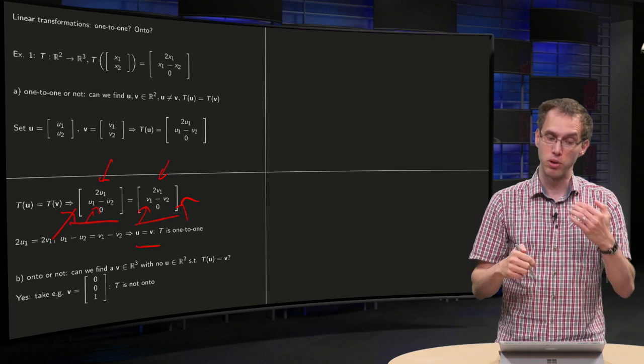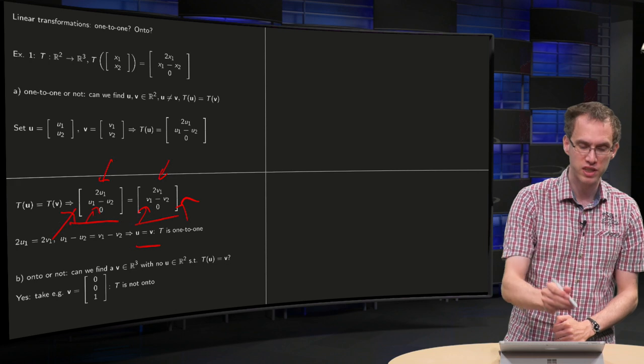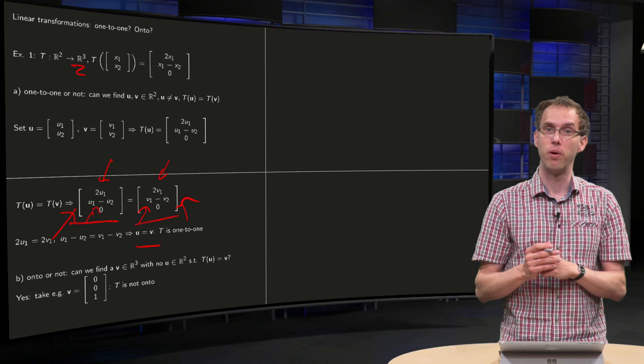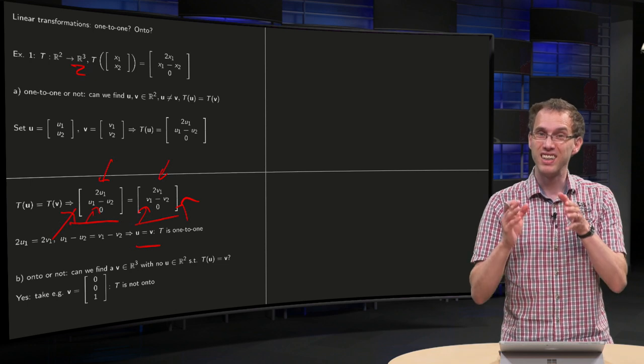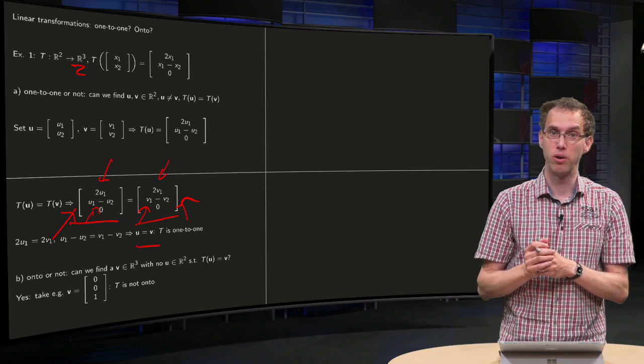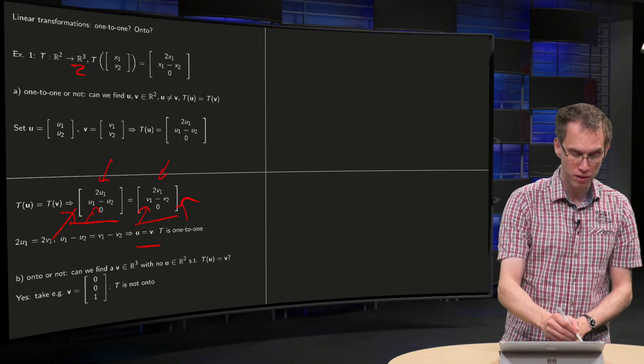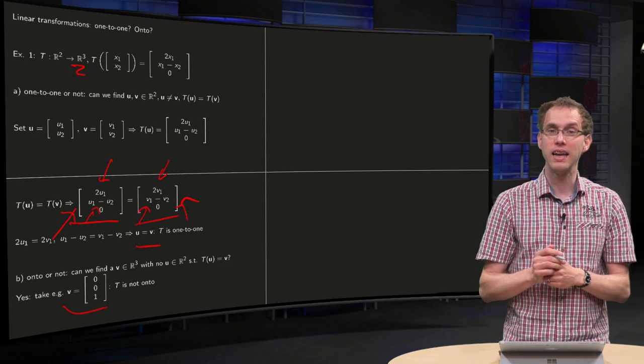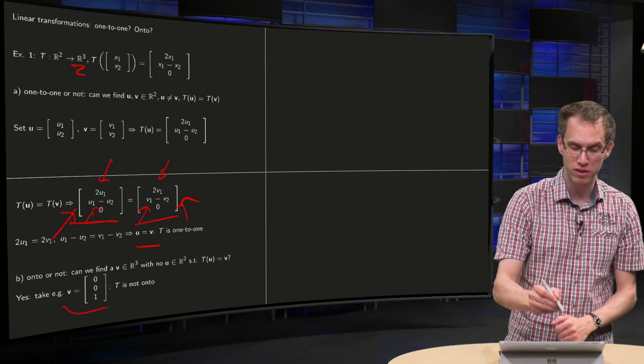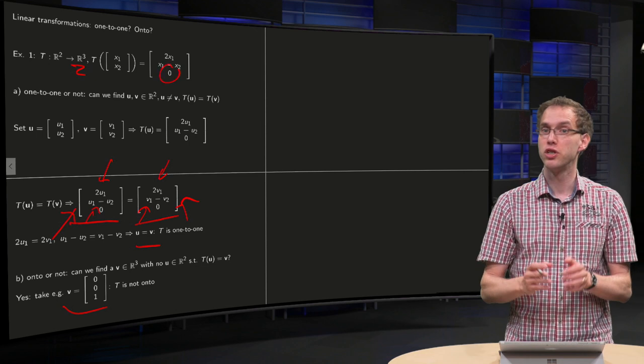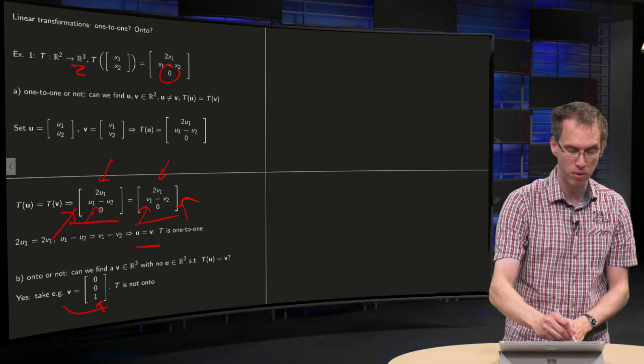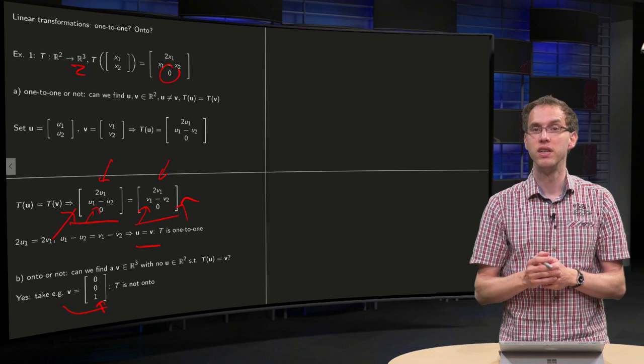What about onto? Can we reach any vector in R³? A transformation is onto if you can reach any vector in the codomain. Take for example this vector v equals (0, 0, 1). You see that any image of any vector has its last component 0, so you will never be able to reach a vector with a non-zero last component.